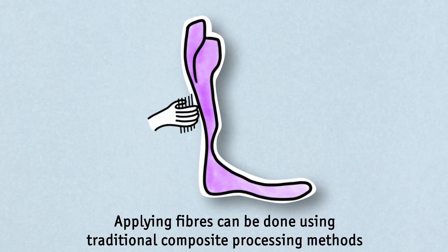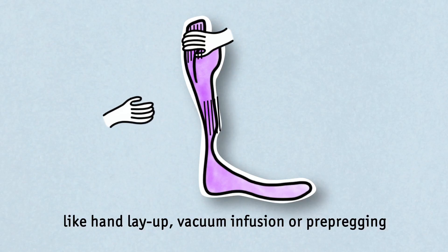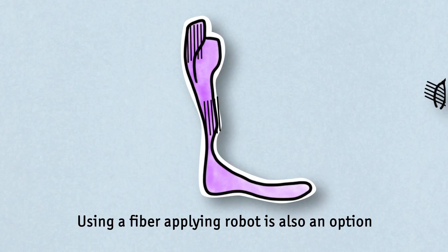Applying fibres can be done using traditional composite processing methods, like hand lay-up, vacuum infusion or pre-pregging. Using a fibre applying robot is also an option.